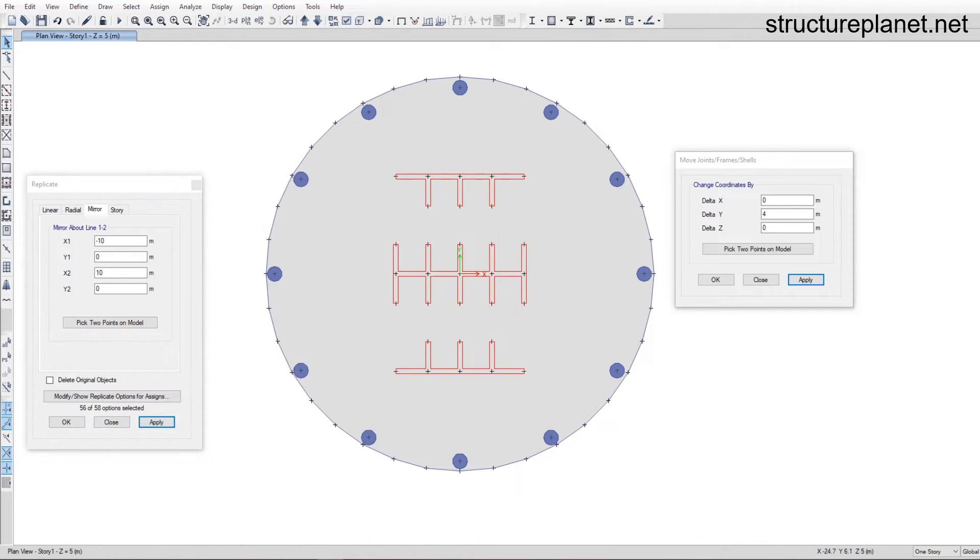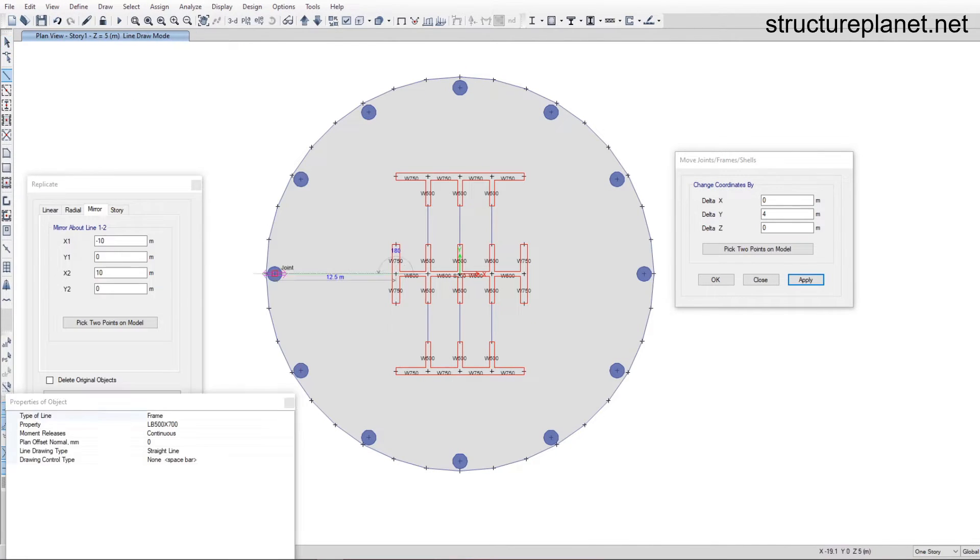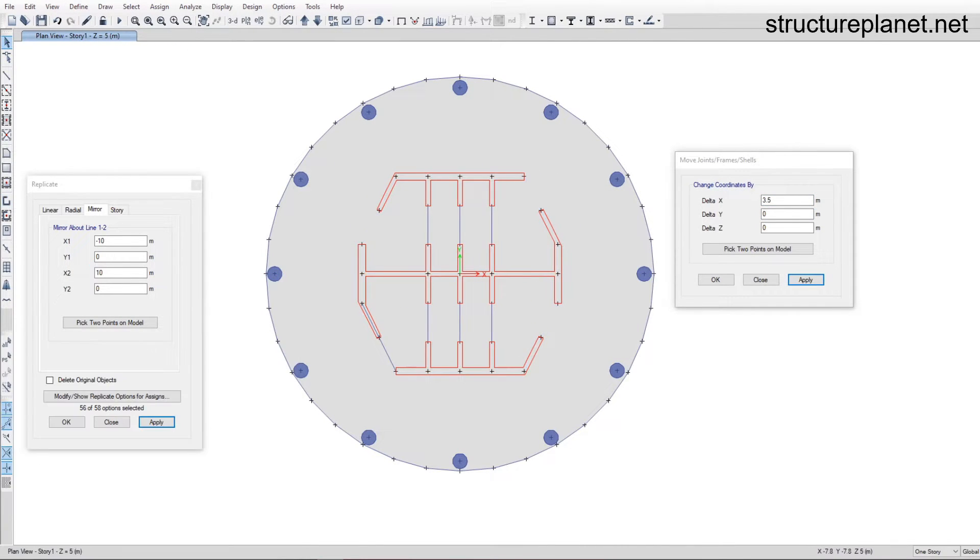They first build the analytical model which consists of all necessary gravity and lateral elements with preliminary sizes. Then they will assign the restraints at the base of the building and add the applicable loads and load combinations followed by other steps.